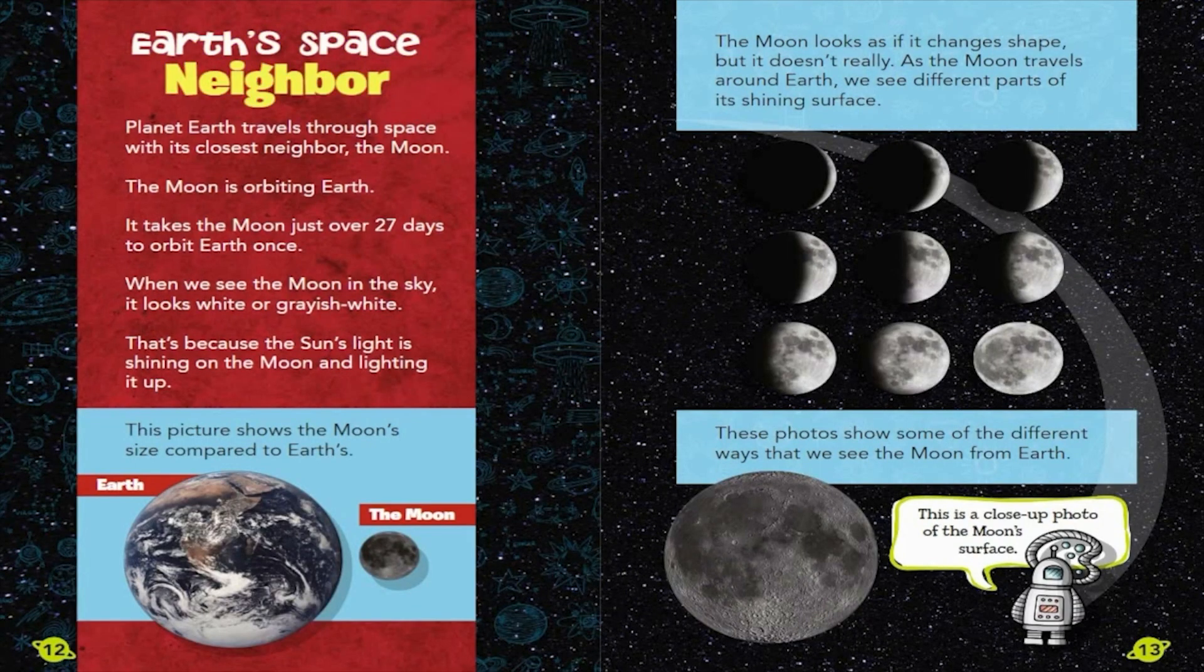Earth's Space Neighbor. Planet Earth travels through space with its closest neighbor, the Moon. The Moon is orbiting Earth. It takes the Moon just over 27 days to orbit Earth once. When we see the Moon in the sky, it looks white or grayish-white. That's because the Sun's light is shining on the Moon and lighting it up. This picture shows the Moon's size compared to Earth's.